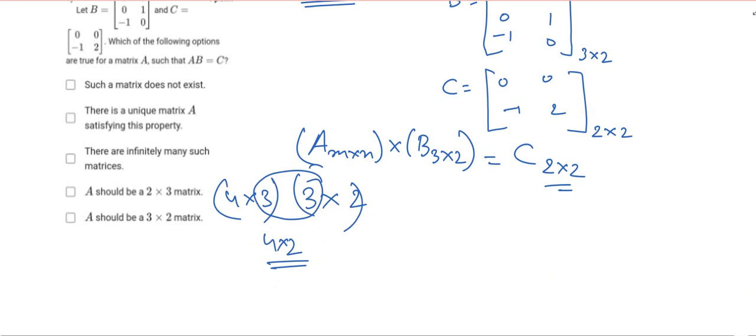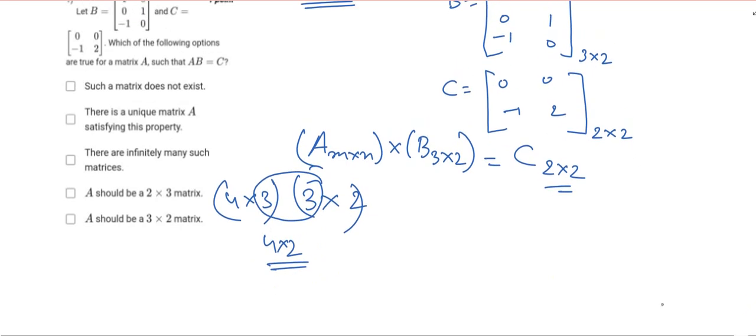Multiplication is only defined between 2 matrices if the number of columns in A is equal to the number of rows in B. From this discussion, we can conclude that to make this happen, N has to be 3 and M has to be 2, so the order of A is 2×3.